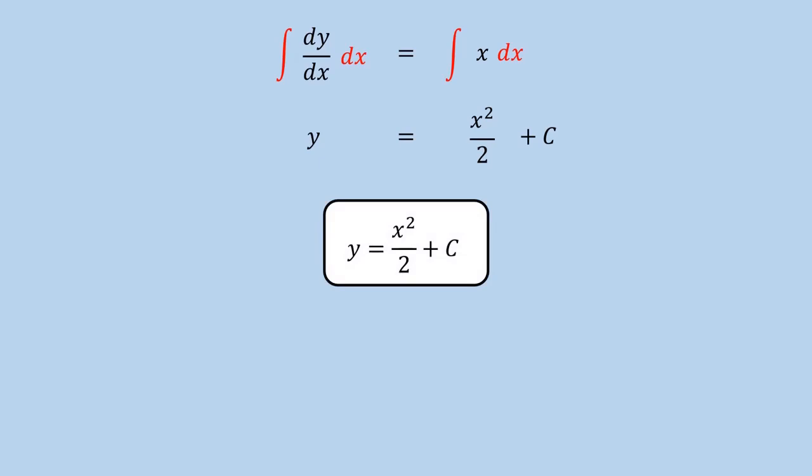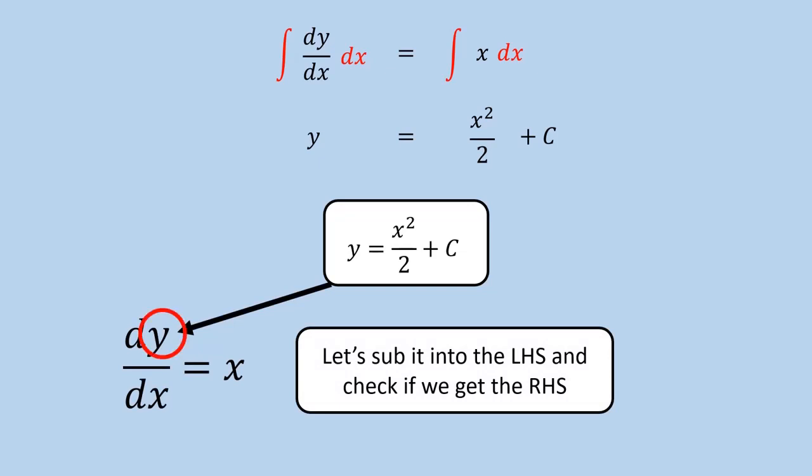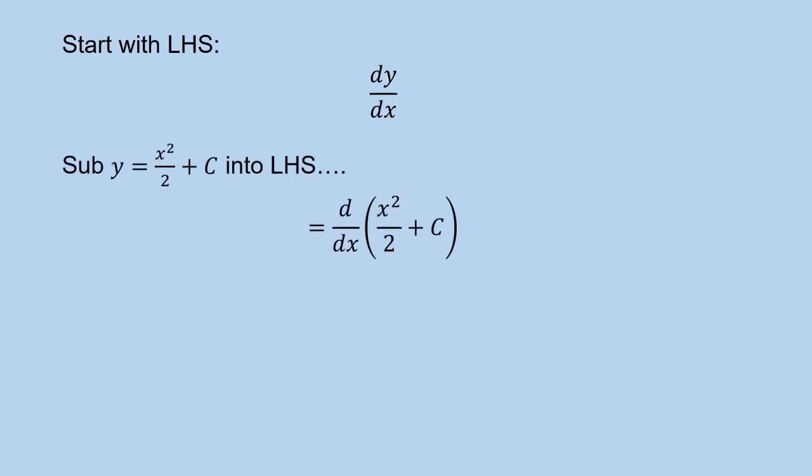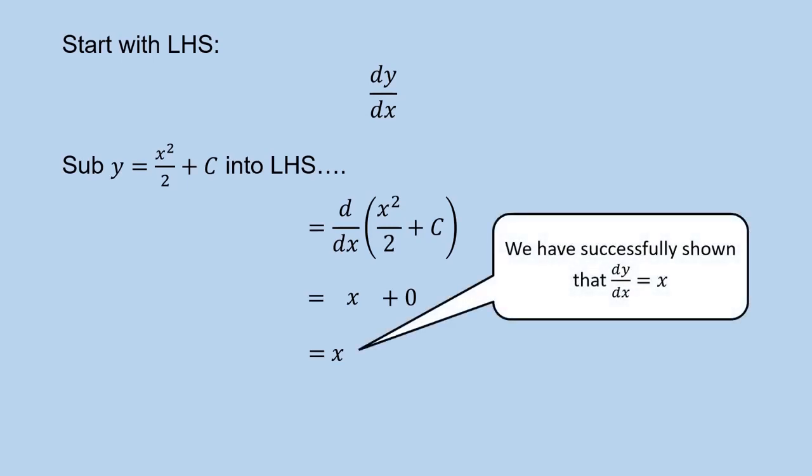And don't forget to add the arbitrary constant. And so we found that y is equal to x squared over 2 plus c. As a practice, let's go ahead and check if this expression for y solves the differential equation. So what we will do is, we need to substitute this expression for y into the left hand side, and check if we eventually arrive at the right hand side of the given differential equation. So we start with the left hand side, which is dy dx. Then substitute the solution we got earlier, and let's differentiate this expression. For the first term, we need to use the rule power bring down power minus 1 to obtain x. Then for the second term, recall that the derivative of a constant is just 0. As you can see, we started with dy dx, and eventually arrived at x. Hence we managed to show that dy dx is equal to x. This shows our expression for y is indeed correct.